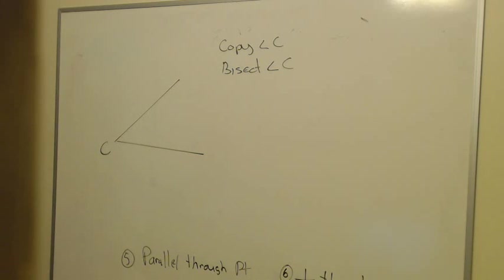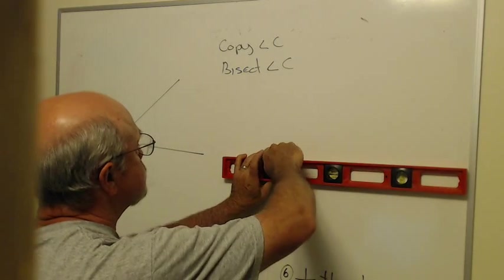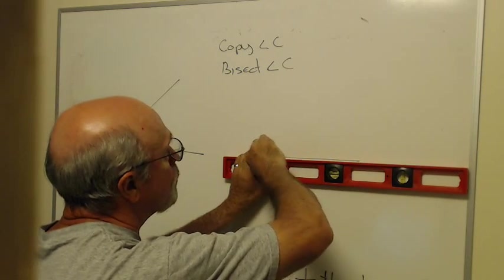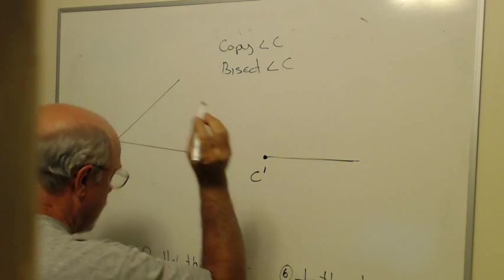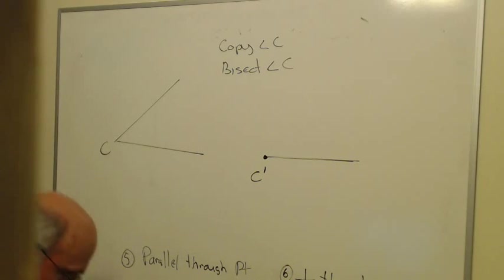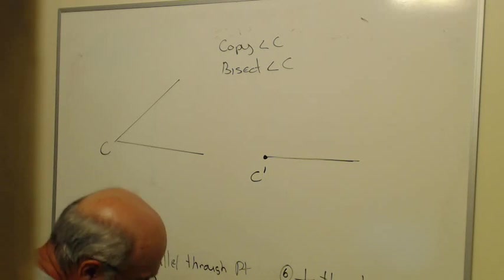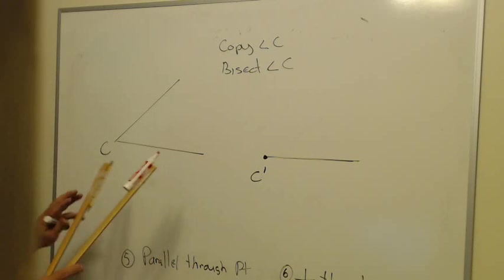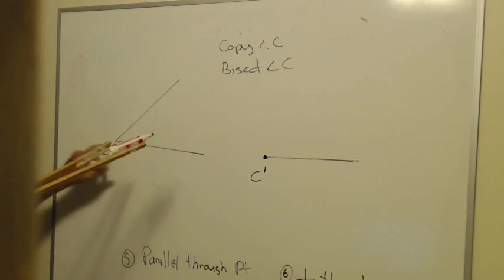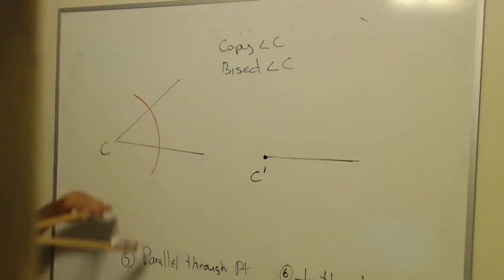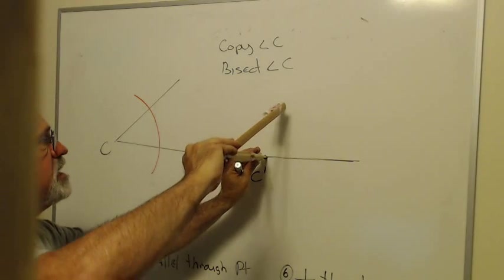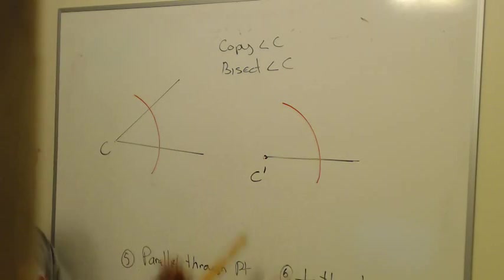To make a copy of it means to make a new angle that's congruent to the original. So I'll start off by drawing one side of my new angle. I'll call that point C prime. What I'm going to do is put the pointy end on C and draw an arc that goes all the way across angle C. I'll put the pointy end on C prime and do exactly the same thing.